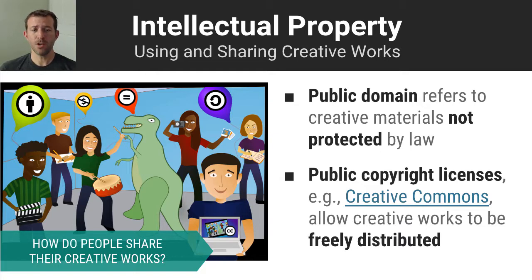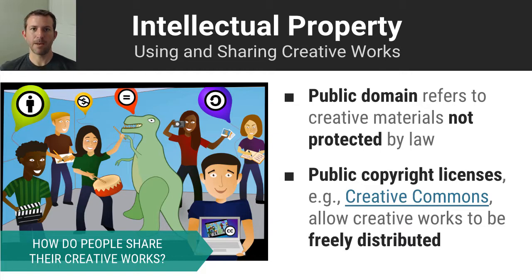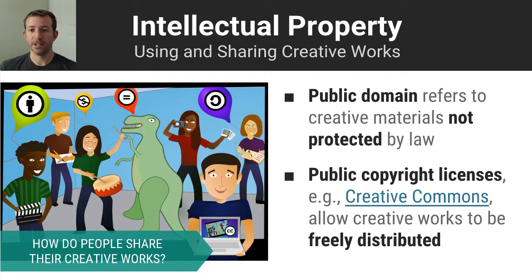Let's say you create something and you don't want to retain a copyright — you want your creative work to be used, remixed, and shared far and wide. What you can do is put a license type on it. For example, Creative Commons is one way that you can mark your creative works as usable by other people, and there are different levels at which you can do this. Using a Creative Commons or some other type of licensing permits other people to use your work — it gives them the green light.